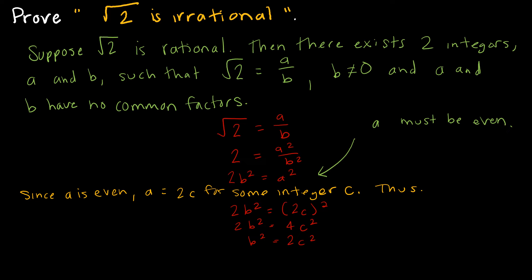Now, where does that get me? This tells me that B must be even, because of this 2, just like here, because of this 2.